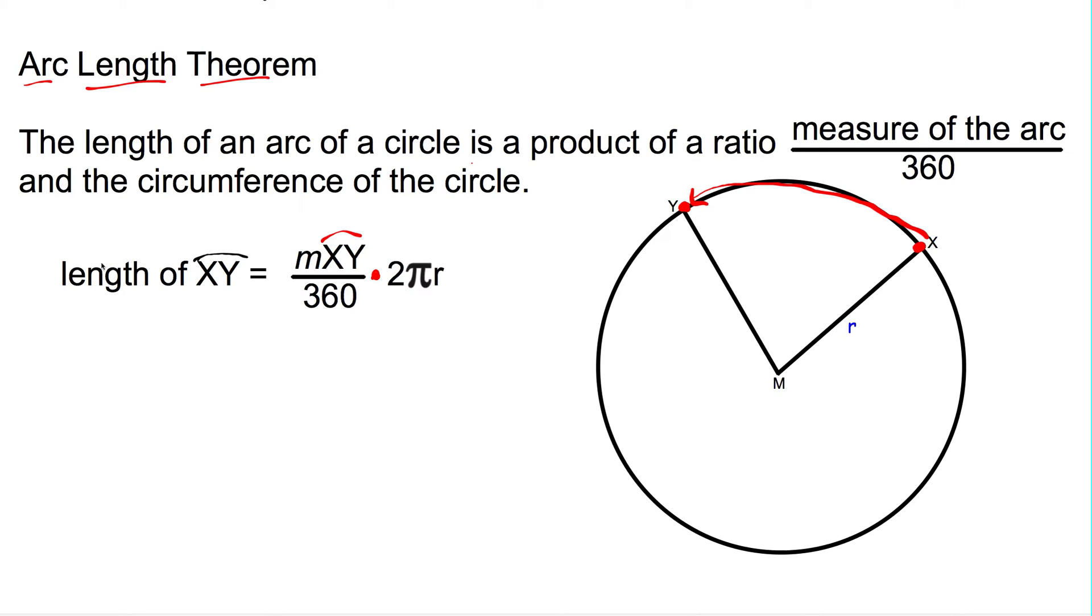So, this equation here, we're trying to find a part of the distance around the outside of a circle. If we could imagine that the measure of arc XY is 45 degrees, and it has a radius of 6 meters, we can figure out the distance it would take us to walk from x to y.